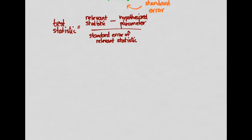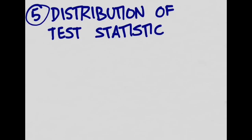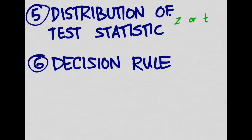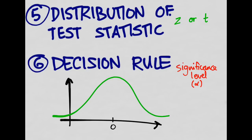Then we need to look at the distribution of that test statistic — whether it's going to be a z or a t distribution. Step six is to look at the decision rule. We draw our distribution, and when we convert everything to z or t, it will have a mean of zero. Next we set a significance level, which we call alpha.